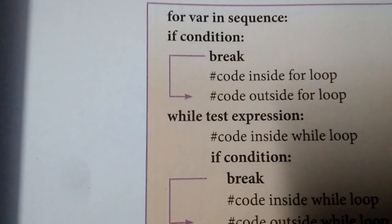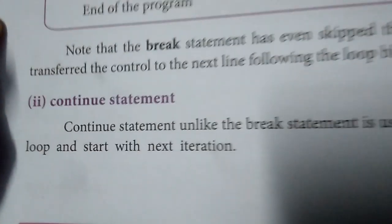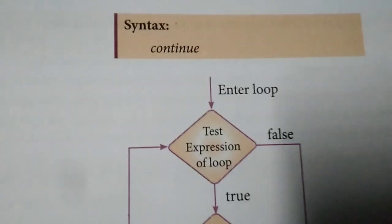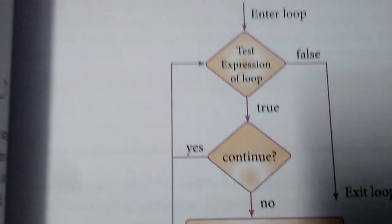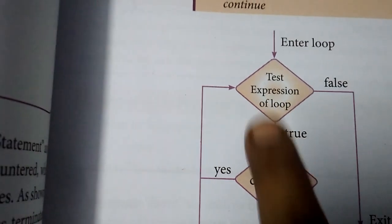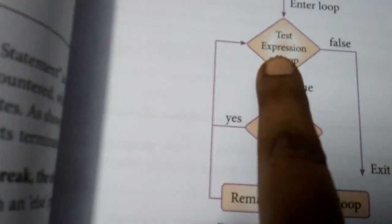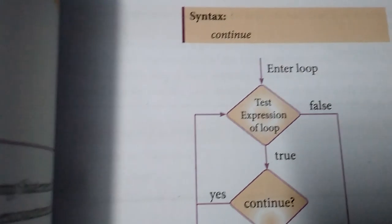Next, if conditions are used with while loops, break is used. Another one is the continue statement. Continue statement executes until the break statement is reached. If it is false, it gets out. So this is used for loops and while loops.